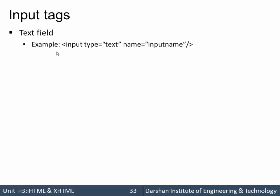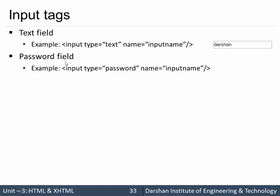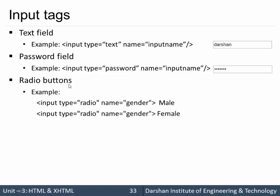Now let's look at input tags — these are the elements that can go inside the form tag. First, we can have a text field where the user can enter text, for example their name. To create this, we write input type equal to text. To enter a password without displaying the characters, we use a password field with the same syntax: input type equal to password. For radio buttons, we use input type equal to radio.